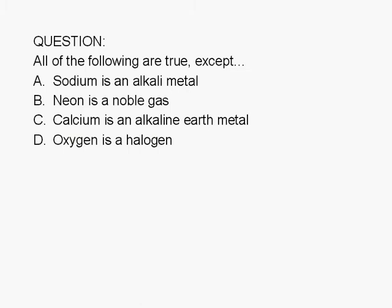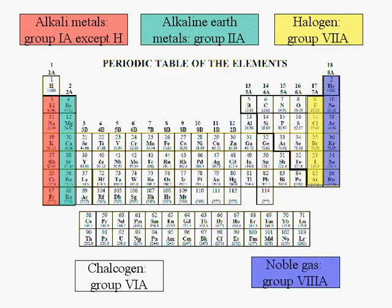To answer this question, let's refer to the periodic table. The alkali metal group is group 1A, excluding hydrogen — highlighted here in red. The alkaline earth metals are found in group 2A, highlighted here in green. The halogens are found in column 17, or group 7A, highlighted here in yellow. The noble gases are found in column 18, or group 8A, highlighted here in blue.